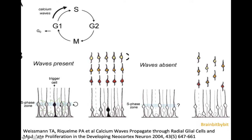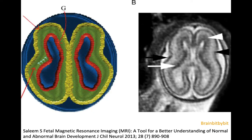In the ventricular zone there are calcium waves, and they synchronize the birth of the neurons from the radial glial cells, so that the neurons migrate in waves from the ventricular zone towards the cortex. The calcium waves play a role by advancing the cell cycle; if you interfere with the calcium waves, the neurons seem to migrate much more randomly — and that is why the migrating neurons normally form such a nice band.